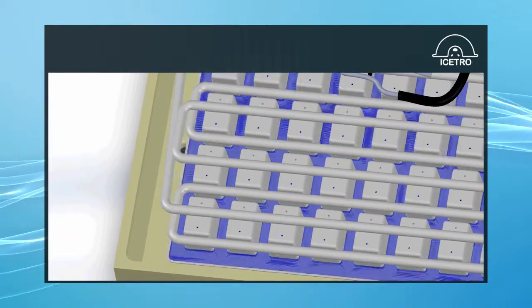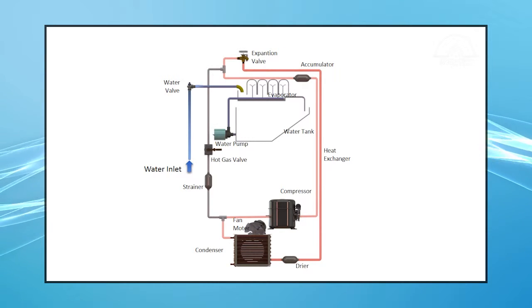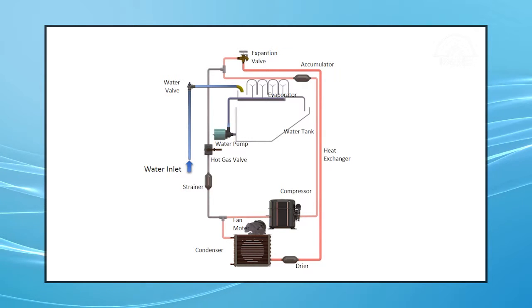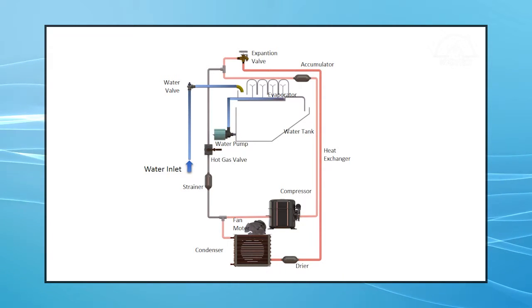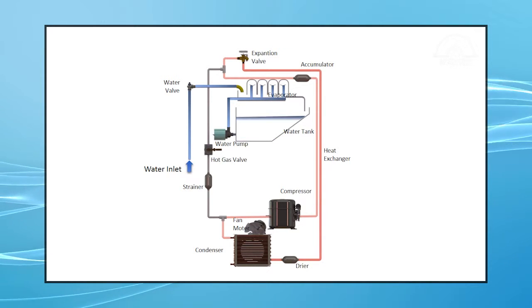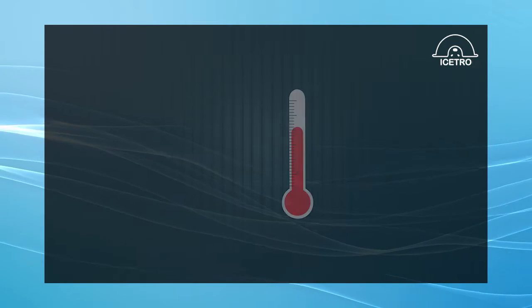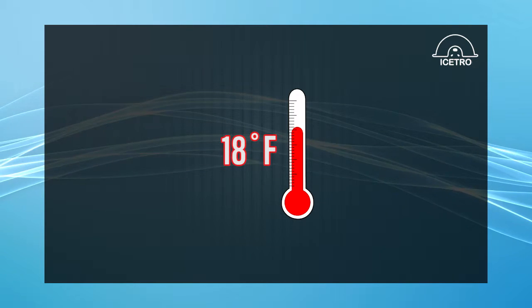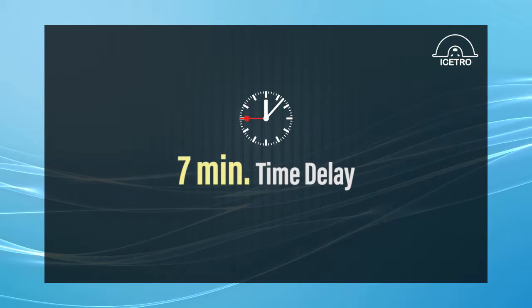At the beginning of the freeze cycle, the water valve shuts off and the water pump compressor and condenser fan motors start. The spray tube and nozzles are now filling cube cells in the freeze cycle and ice begins to form. This process continues until the evaporator reaches 18 degrees Fahrenheit. The controller board then initiates a seven-minute time delay to complete the freeze cycle.